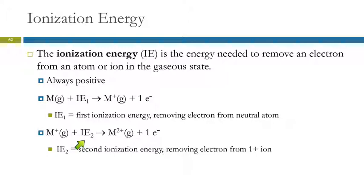The second ionization energy is always greater than the first. Each successive ionization energy is larger because the remaining electrons are more tightly held — the effective nuclear charge on them is increasing. The more electrons you remove, the harder and more expensive it becomes to remove the next one.